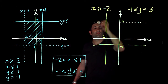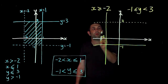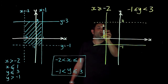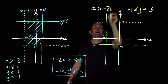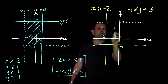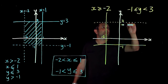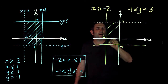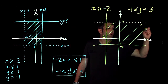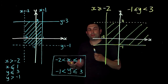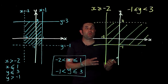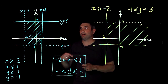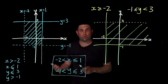The region to shade is to the right of x equals minus two and between the two horizontal lines, so the shaded area sits in there. Key thing to remember: draw the lines first. Dotted lines mean strictly greater than or less than; solid lines mean greater than or equal to.